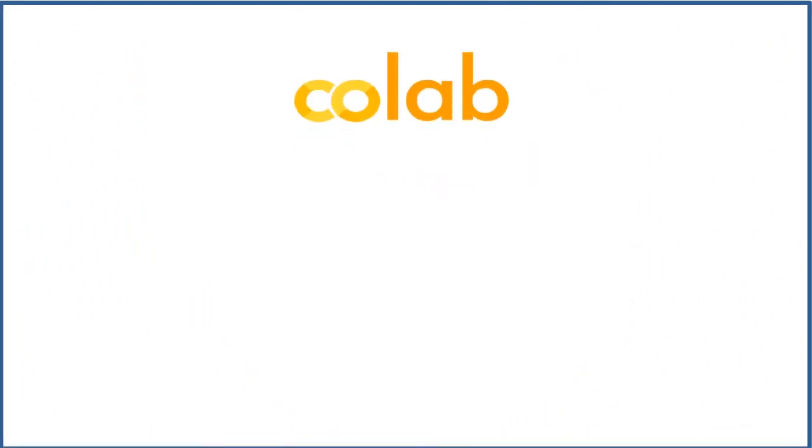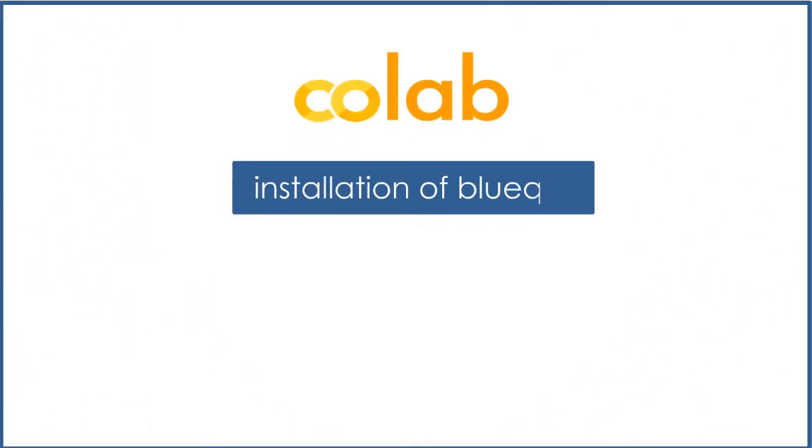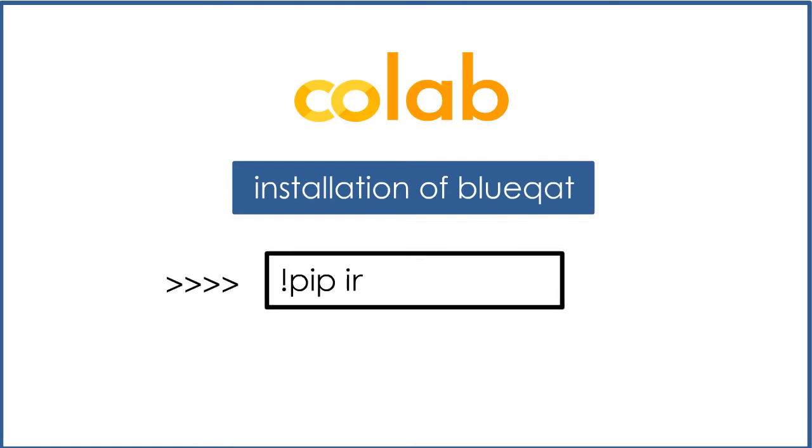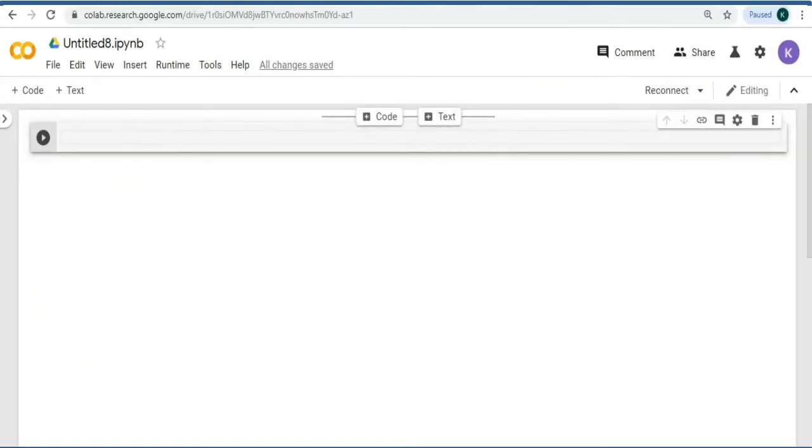Before that, we shall be doing the coding in the Google Colab app. First, we need to install Blueqat. In order to do that, type in !pip install blueqat in Google Colab app. Now, let's do it. Type in !pip install blueqat. Run this.